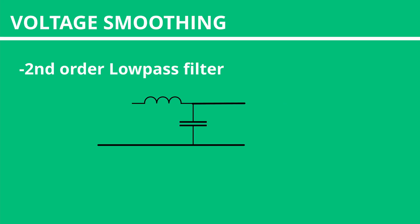Of course, we don't want our voltage to be turning on and off. So after our pulse width signal, we'll add in a second-order low-pass filter, consisting of a capacitor and an inductor to smooth out the peaks and troughs.